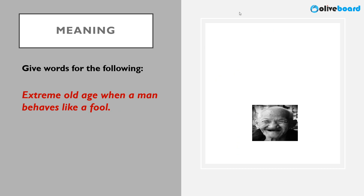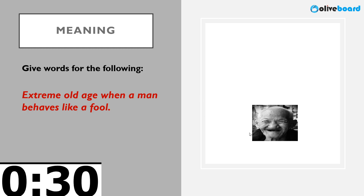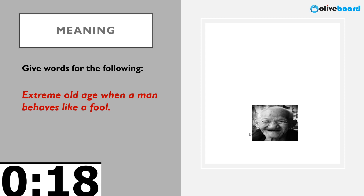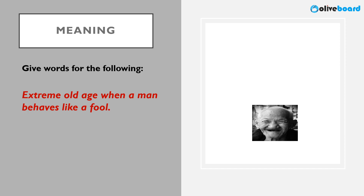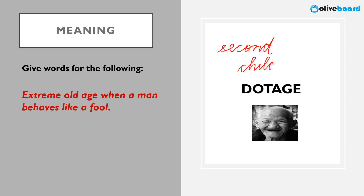Next: extreme old age when a man behaves like a fool — also called the declining years. This is the old age where a person is very weak and very old, where we say childhood returns — it's called the second childhood of a person. The correct word is dotage. Old people who behave like a child at a particular age — that is dotage, the declining years.